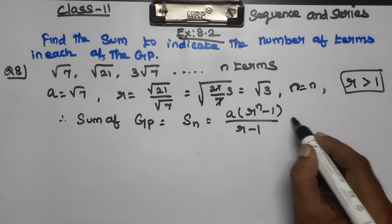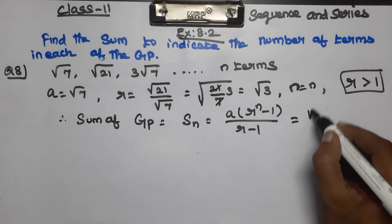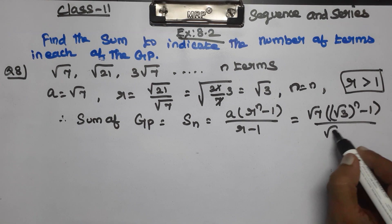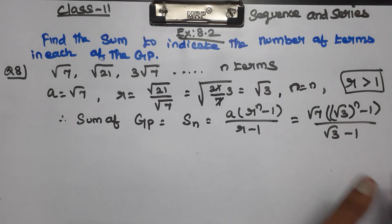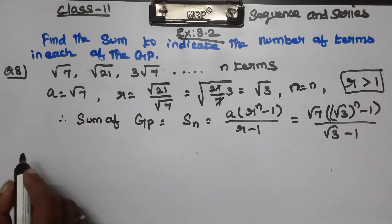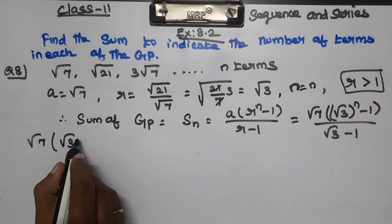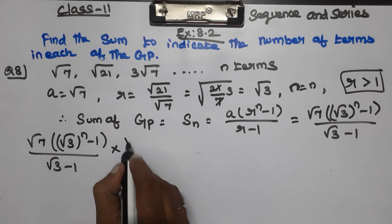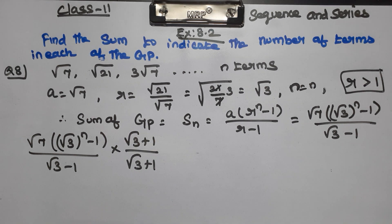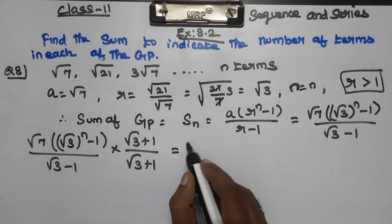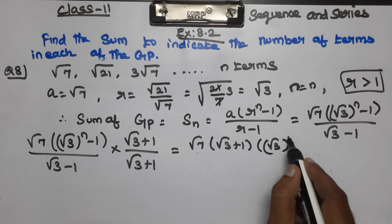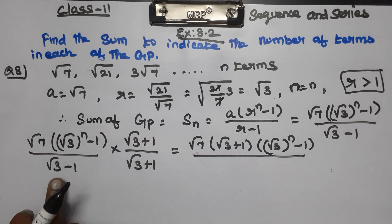Here, a equals √7 and r equals √3. Substituting: Sn equals √7 into (√3ⁿ - 1) divided by (√3 - 1). To rationalize, multiply numerator and denominator by (√3 + 1), giving (√3 - 1)(√3 + 1) in the denominator which equals a² - b² form.